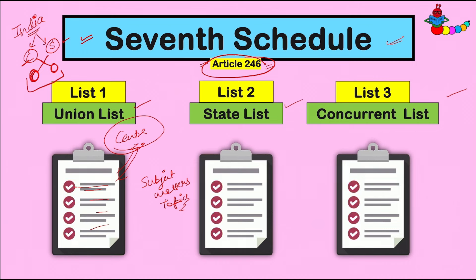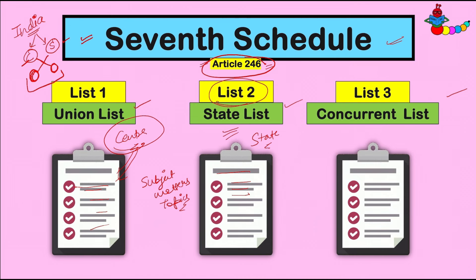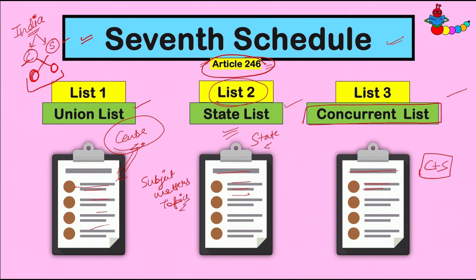State को कोई permission नहीं मिलेगी उन topics को touch करने की। वहीं List 2 में जो भी subject matters लिखे होंगे, उनमें law बनाने की permission मिलेगी State को। Center चाहे कितना भी powerful क्यों न हो, लेकिन वो List 2 की items पे law नहीं बना सकता। वहीं एक Concurrent List भी रखी गई, जिसमें बोला गया कि ये दोनों law बना सकते हैं, और चाहें तो मिलकर भी law बना सकते हैं — इसमें ऐसे topics थे जिन पे law बनाने की permission दोनों को मिली है।